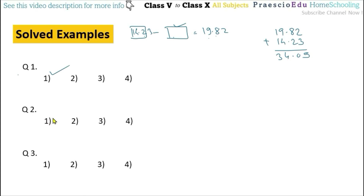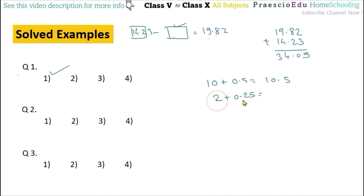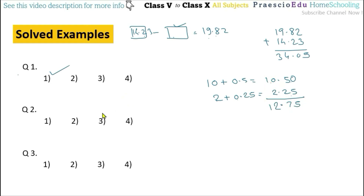Now question number 2: find the sum of 10 and a half and 2 and a quarter. 10 and half means 10.5, and 2 and a quarter means 2 plus 0.25, which equals 2.25. So we have to do this summation. The 5 is at the 10ths and 0 at the 100ths, and 2 is at the 10ths and 5 at the 100ths. So 50 plus 25 is 75, and 10 plus 2 is 12, giving us 12.75. This is given in option number 3.